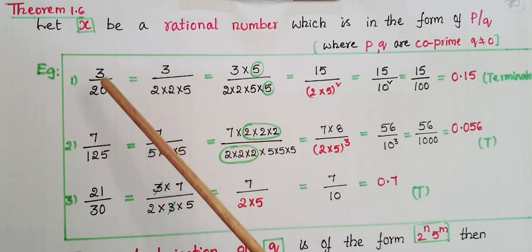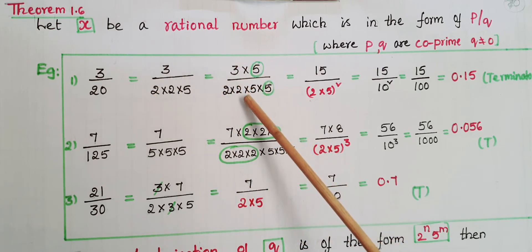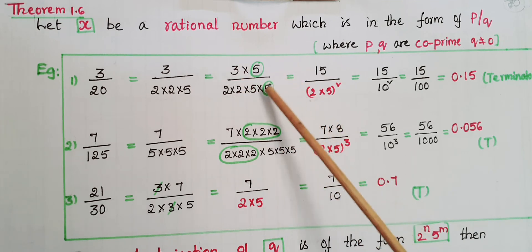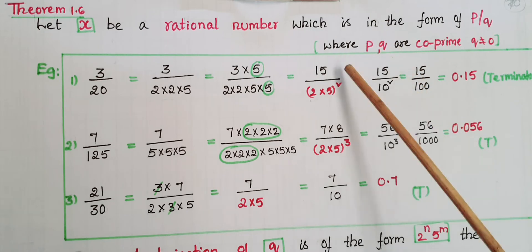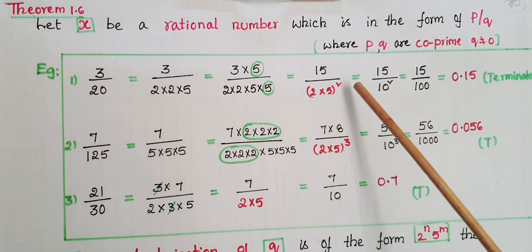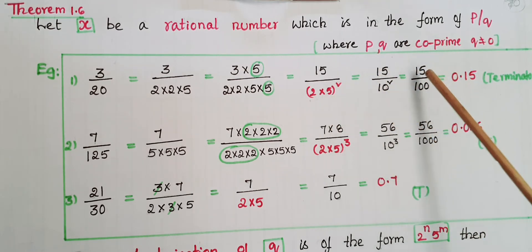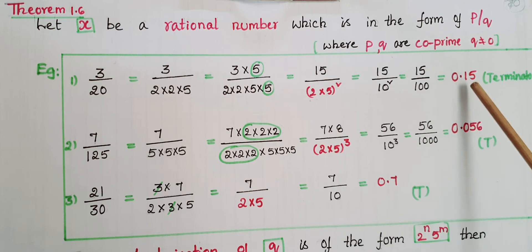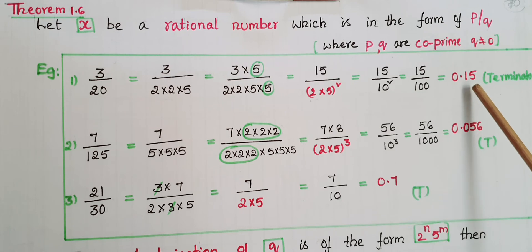To convert this rational number into decimal form, convert the denominator into powers of 10. Multiply 5 in the denominator and the same 5 in the numerator: 3 into 5 is 15, and the denominator has two 2s and two 5s — so 2 into 5 whole squared equals 10 squared. That gives 15 by 100, which is 0.15. So the rational number 3 by 20 has a terminating decimal expansion.